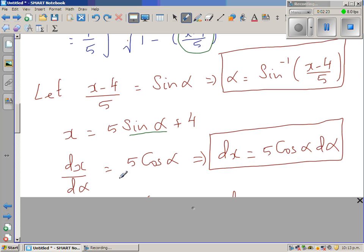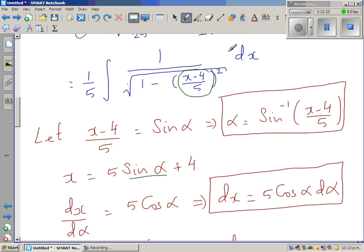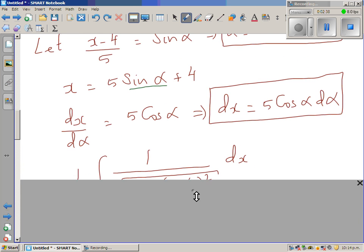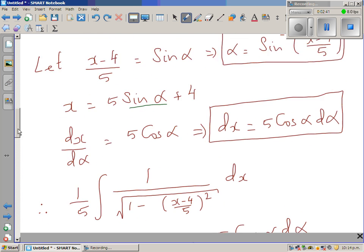So now this whole thing, in place of this dx, I can write 5 cos alpha d alpha. And in place of this, I'm going to write sin alpha. I have rewritten this whole thing again.